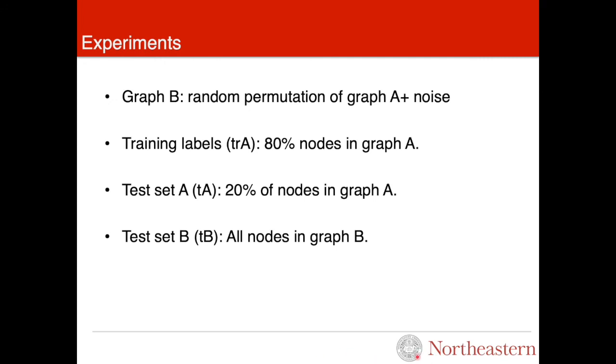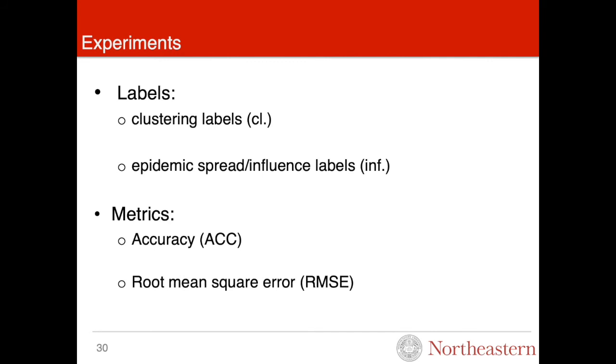During our experiments, we initially have graph A. Graph B is a random permutation of graph A plus noise. We use a training set to train on graph A by training on 80% of nodes. We use the remaining 20% of nodes in graph A as a test set. The test set on graph A is a more classic thing to do. We also test on graph B, which is the graph transfer learning problem. We predict two types of labels: clustering labels and epidemic spread or influence labels.